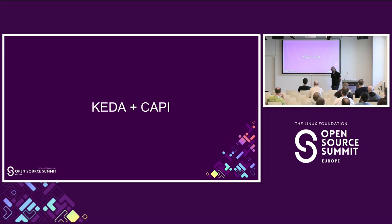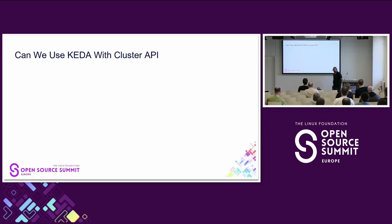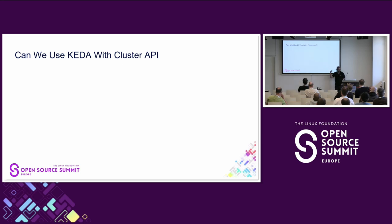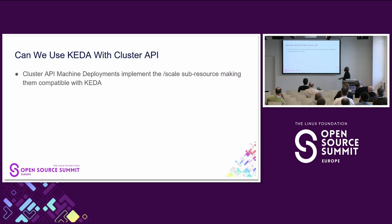What we're actually here to discuss is KEDA with Cluster API. KEDA allows proactive autoscaling — you can autoscale when you know you're about to reach a problematic state, for example scaling up at 80% CPU capacity instead of waiting for 100% and pod scheduling failures. Crucially, Cluster API machine deployments implement the `/scale` sub-resource, making them fully compatible with KEDA. This means that regardless of cloud provider, if you use Cluster API, you can use KEDA to autoscale your Kubernetes clusters using any of the 50-plus scalers.